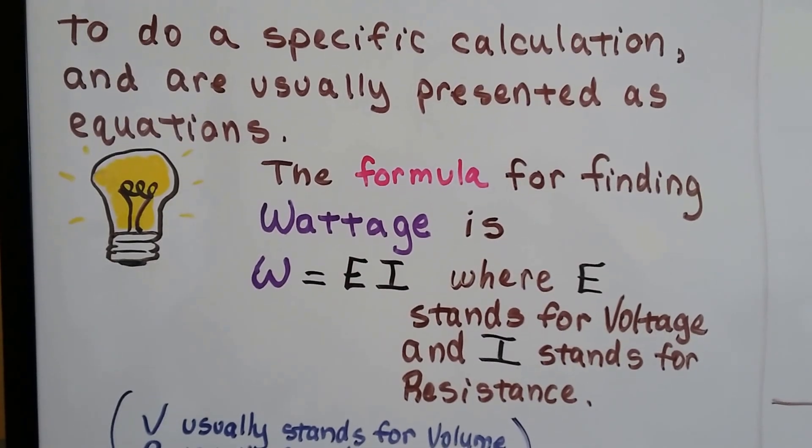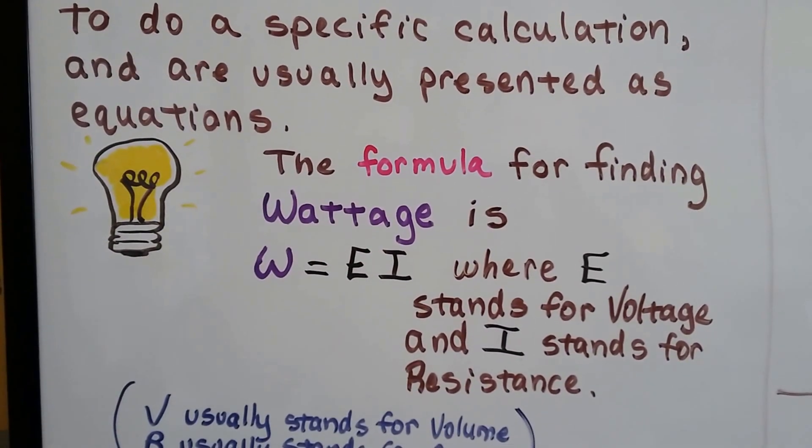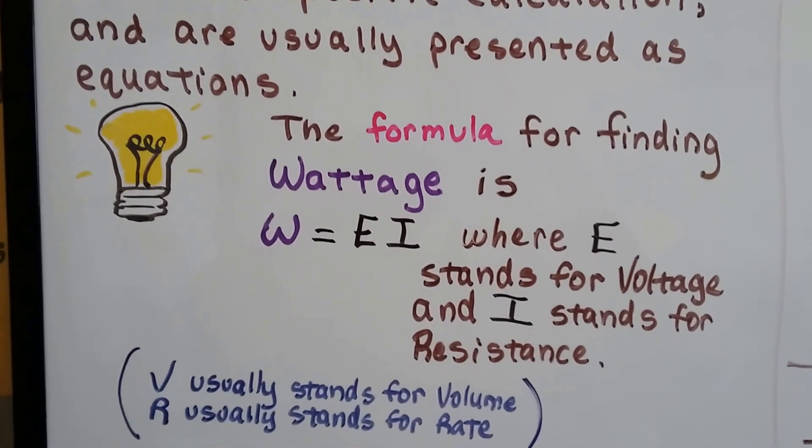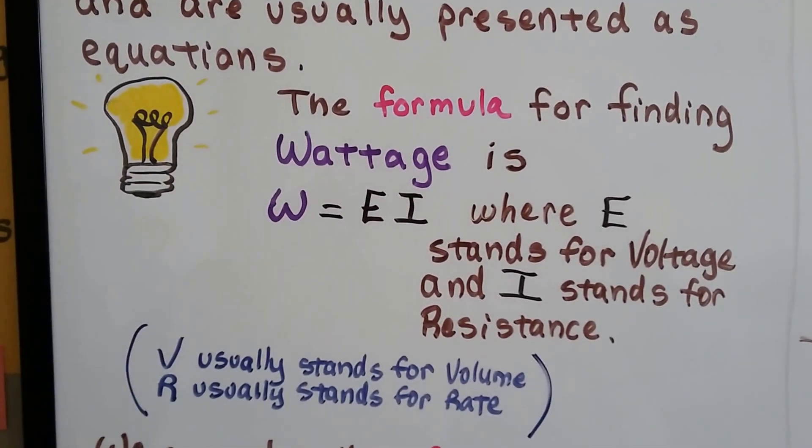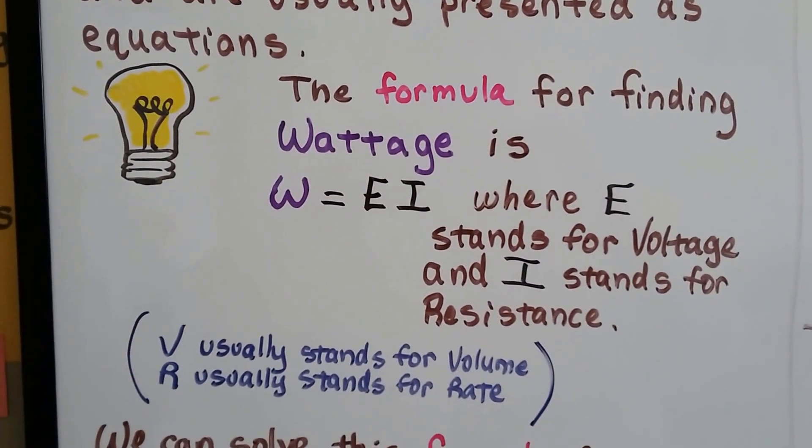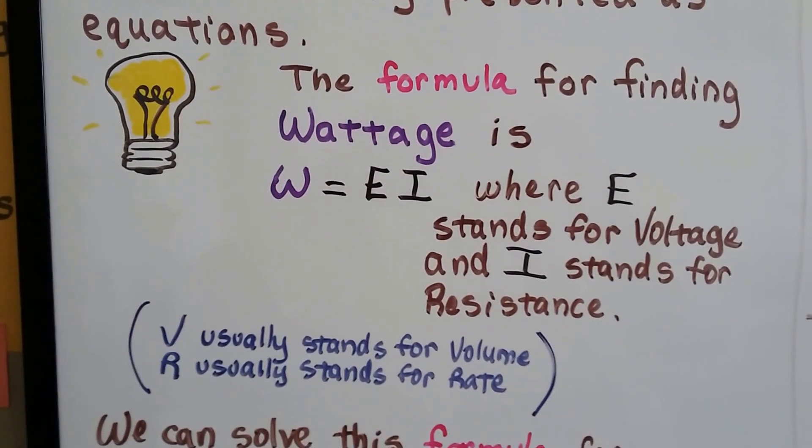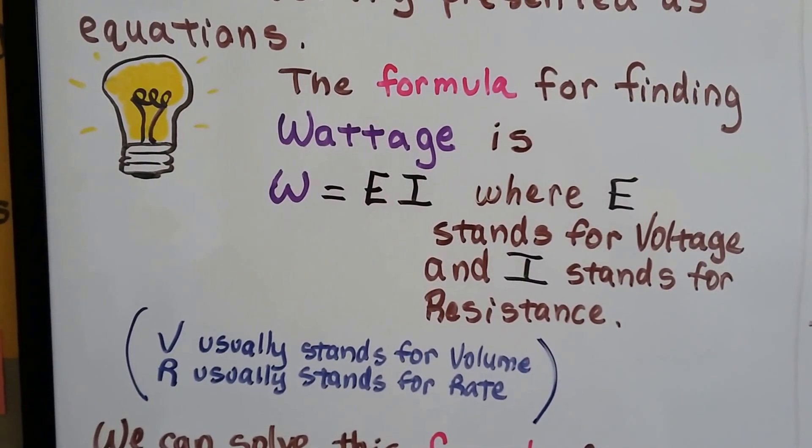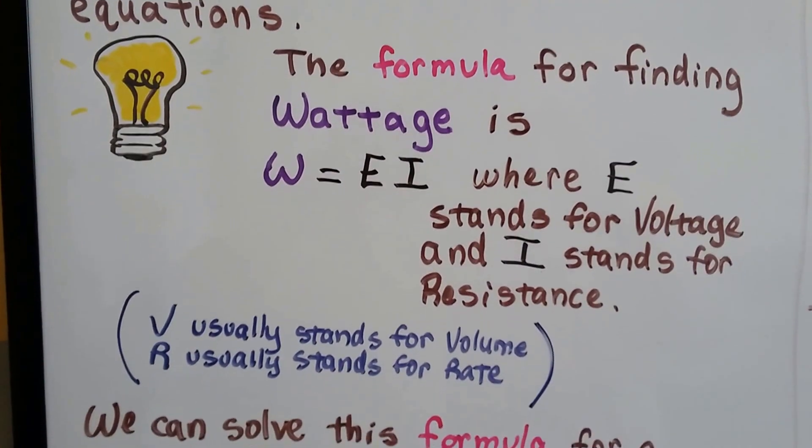The formula for finding wattage is W equals EI, where the E stands for voltage and the I stands for resistance. I know that sounds kind of silly because you'd say, why don't they use V for voltage and R for resistance? Well, V usually stands for volume in a formula, and R usually stands for rate. So they gave it an E and an I.